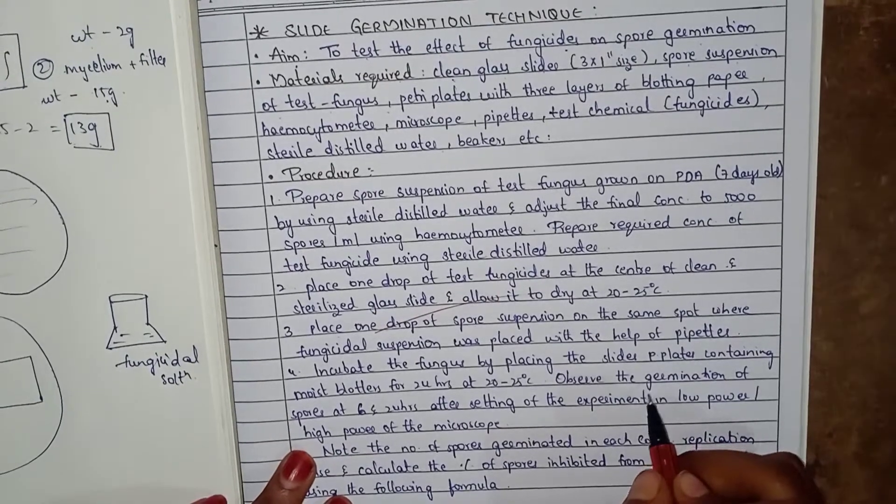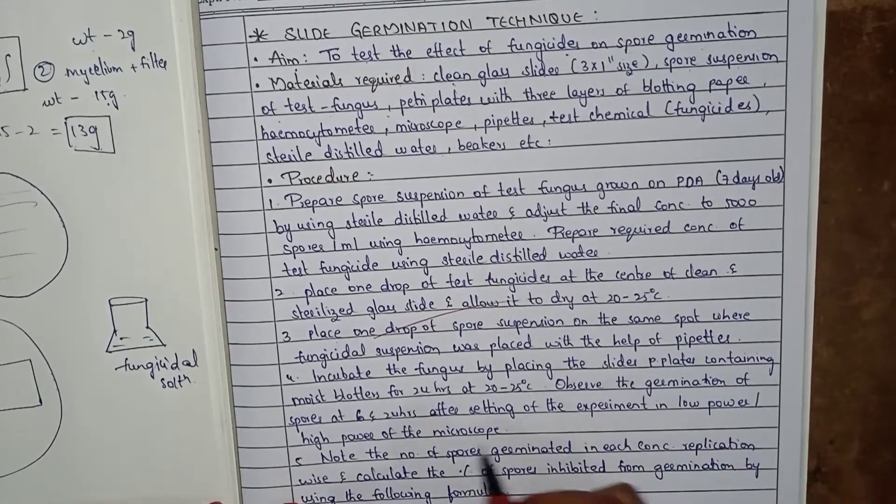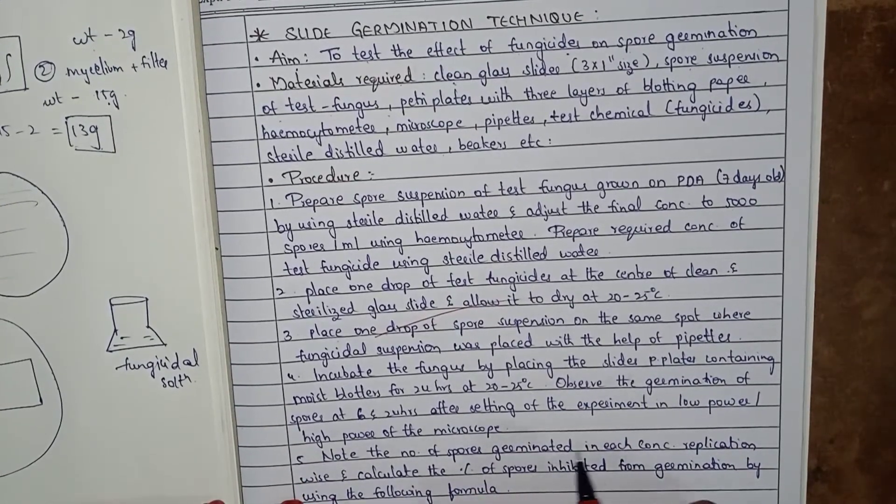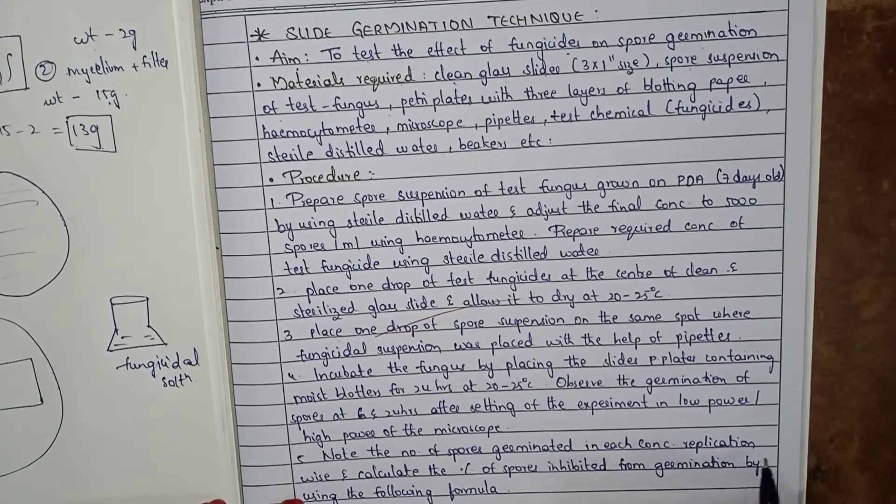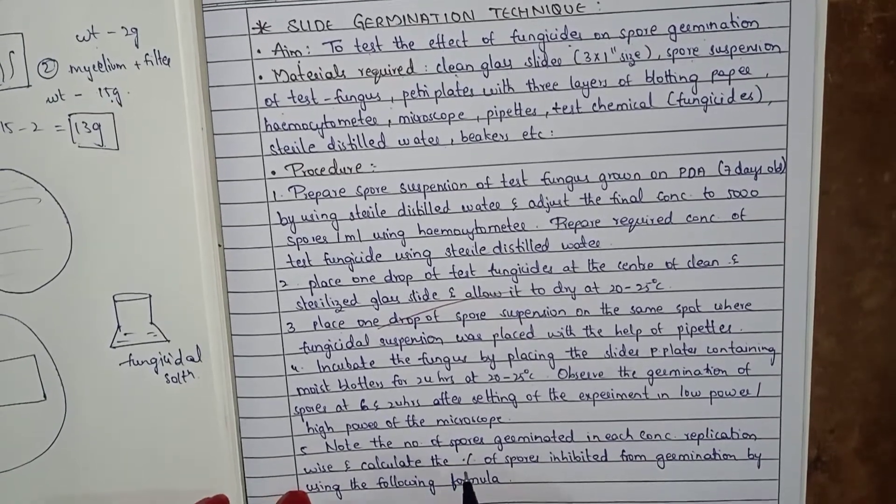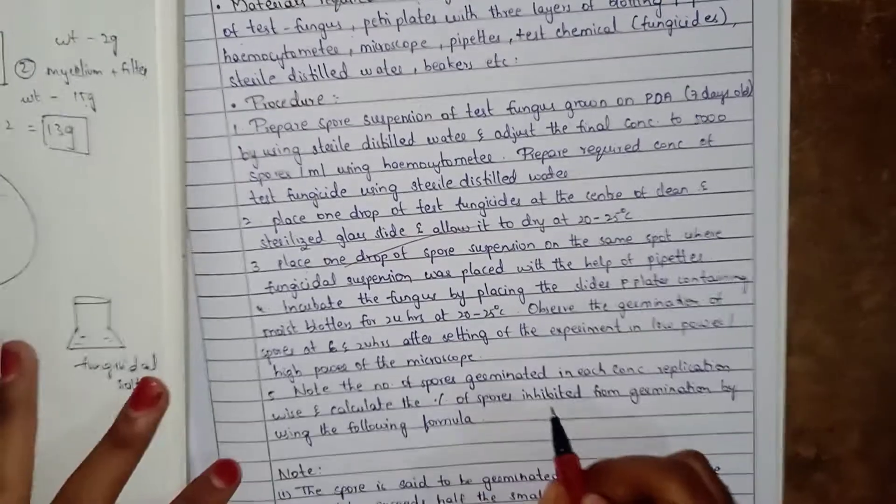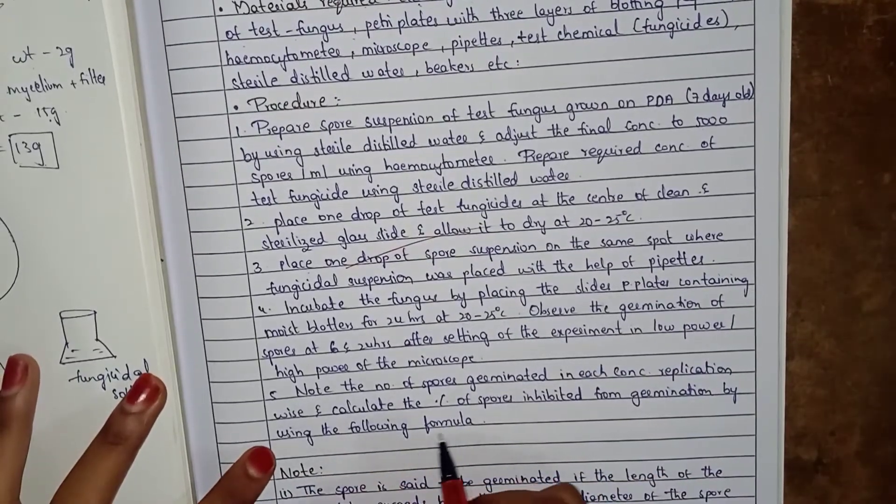Note the number of spores germinated in each concentration replication-wise and calculate the percentage of spores inhibited from germination by using the following formula.